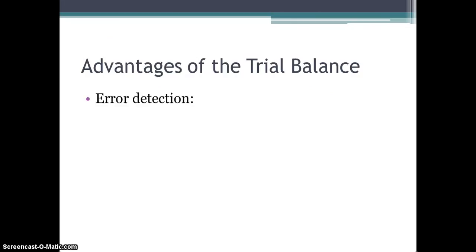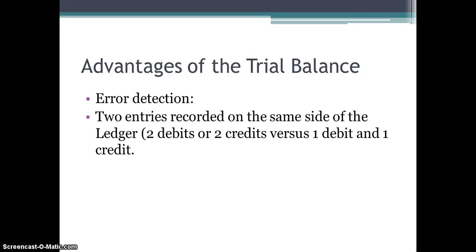The main advantage of preparing a trial balance is error detection. If the trial balance doesn't balance — meaning total debits do not equal total credits — there's obviously been an error. This could mean you put two debit entries or two credit entries into a transaction instead of one debit and one credit.